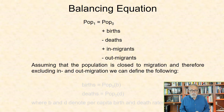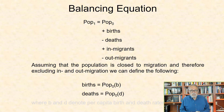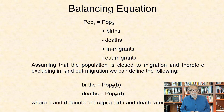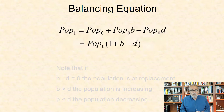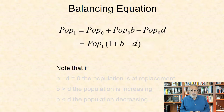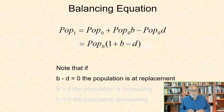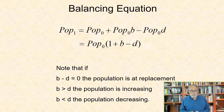Assuming that the population is closed to migration, and therefore excluding in-and-out migration, we can define the following: births equal population at time 0 times b; deaths equal population at time 0 times d, where b and d denote the per capita birth and death rates, respectively. Therefore, we have population at time 1 equal to population at time 0 times 1 plus b minus d. Note that if b minus d equals 0, the population is at replacement. If b is greater than d, the population is increasing, and if b is less than d, the population is decreasing.